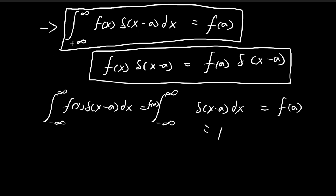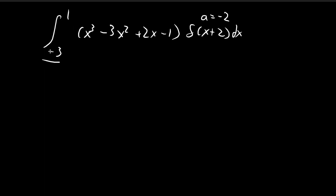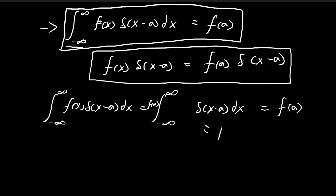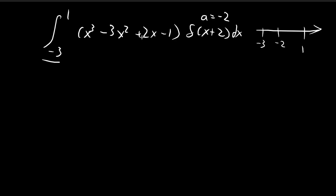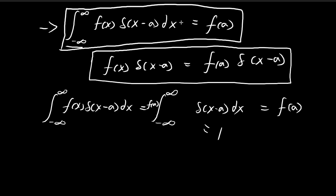Note that in our proof the integral goes from negative infinity to positive infinity, while here the bounds go from -3 to +1. But it doesn't matter as long as a lies inside this range. The domain goes from -3 to 1, and a = -2 lies inside that domain, so the formula applies.